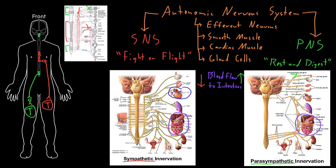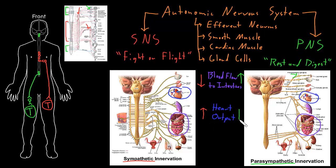Looking at the heart, both the sympathetic and parasympathetic nervous systems innervate it. When the sympathetic nervous system is activated, heart output increases — the heart pumps harder and faster, pushing more blood out so skeletal muscle can receive more blood flow. When the parasympathetic nervous system is activated, heart output goes down; the heart beats less often and works less hard, because you don't need as much blood flow to the muscles. These examples involve smooth muscle around blood vessels and cardiac muscle in the heart.